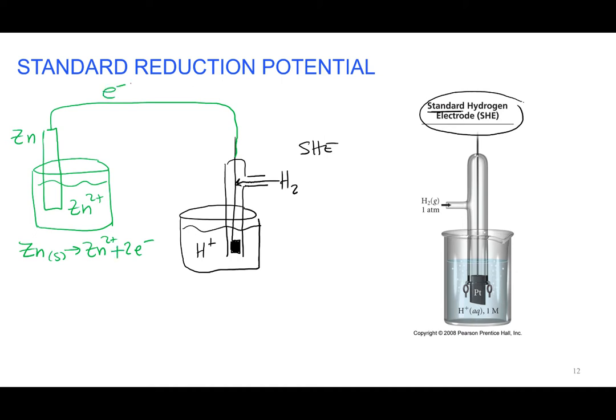Electrons will flow. What will be reduced at the standard hydrogen electrode? It turns out it will be the hydrogen. So the hydrogen ions in the acidic solution will each gain one electron to make hydrogen gas.